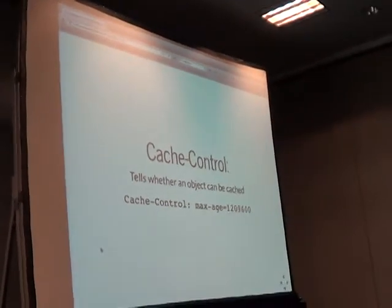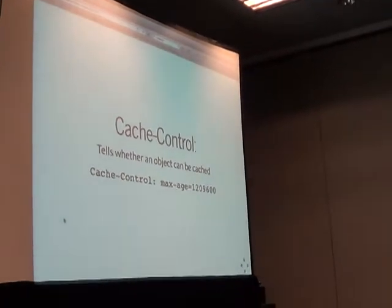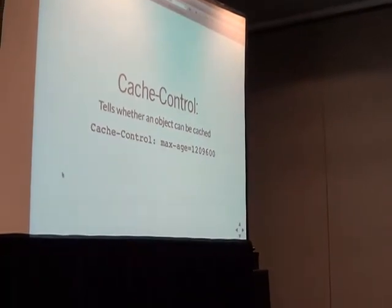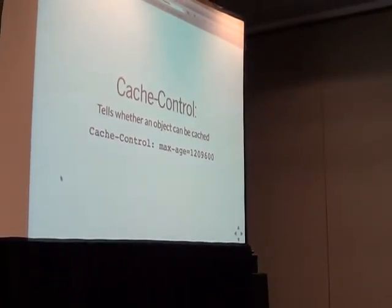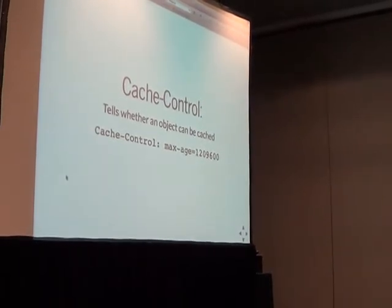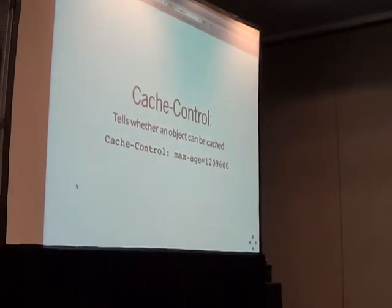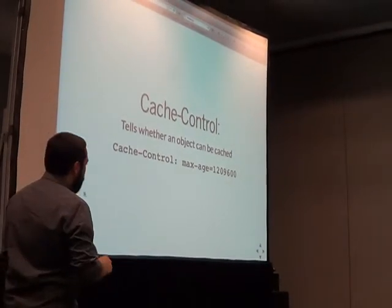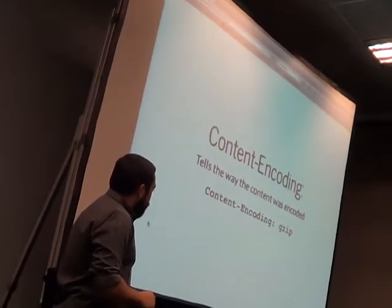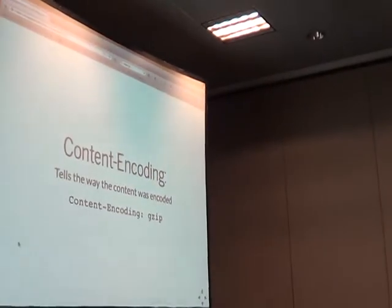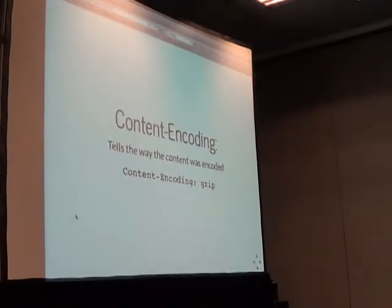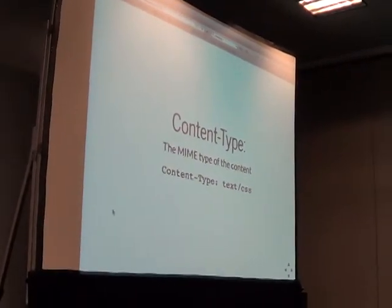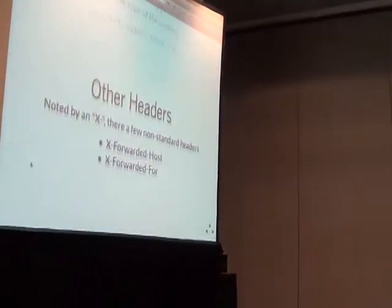Cache-Control: the server tells the client, hey, if you can, go ahead and keep this around for a little while. Maybe it's a CSS file or JavaScript file that doesn't change very often — like a jQuery framework from Google. Don't download it again if you don't have to. Content-Encoding: the server tells the client what I'm sending has been encoded through gzip or deflate or another encoding type. And Content-Type: what I'm sending you is going to be this type.